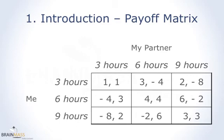So in that case, both of us have payoff 1. If I put in 9 hours of work and my partner puts in 3 hours, then my payoff is minus 8 and his payoff is plus 2. If I put in 6 hours and he puts in 9 hours, then my payoff is 6 and his payoff is minus 2. Always remember: the number on the left corresponds to the player whose name is on the left, and the number on the right corresponds to the player whose name is on top of the matrix.